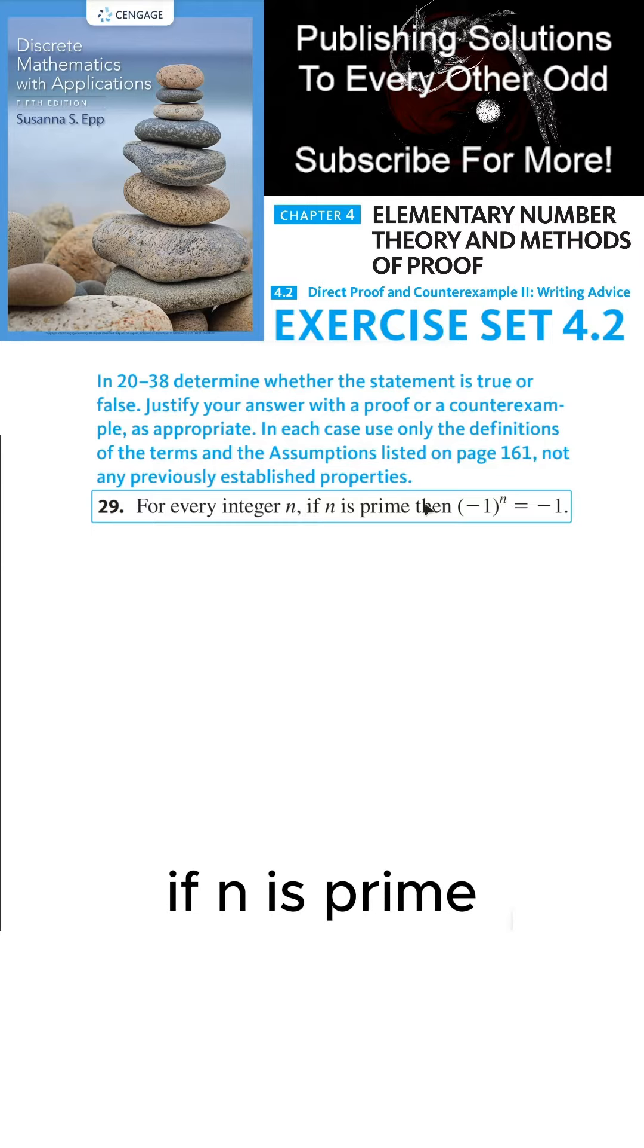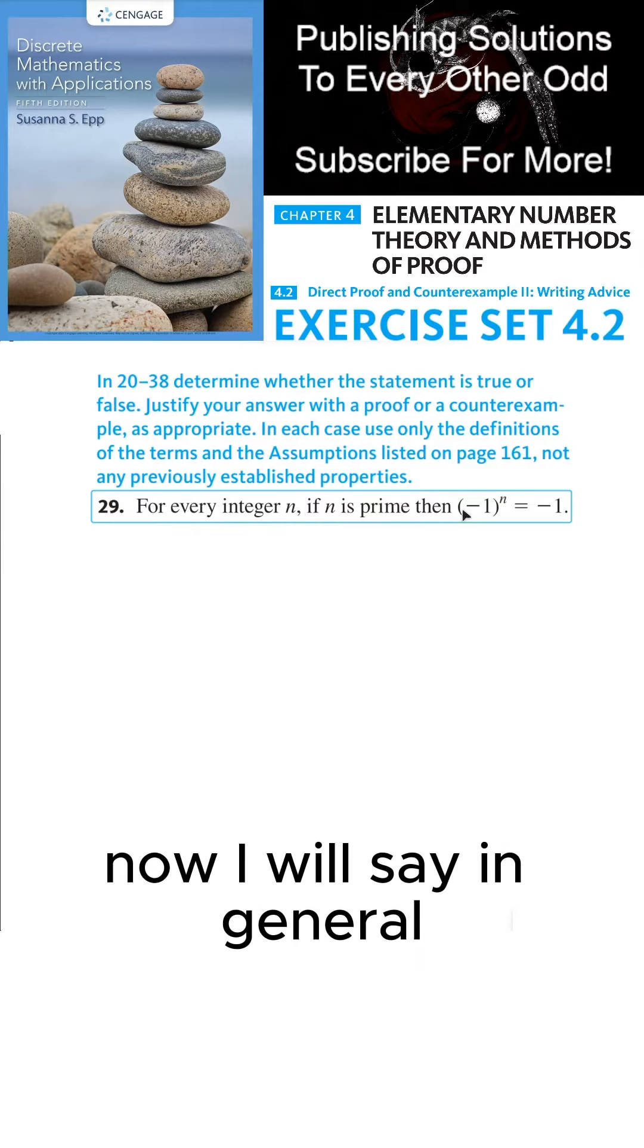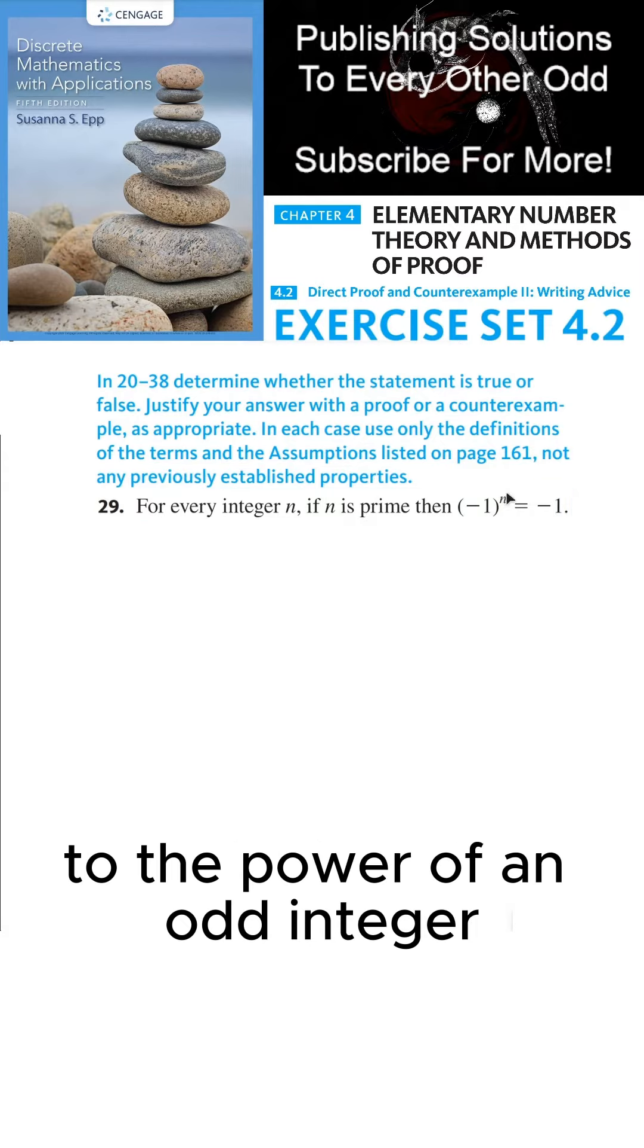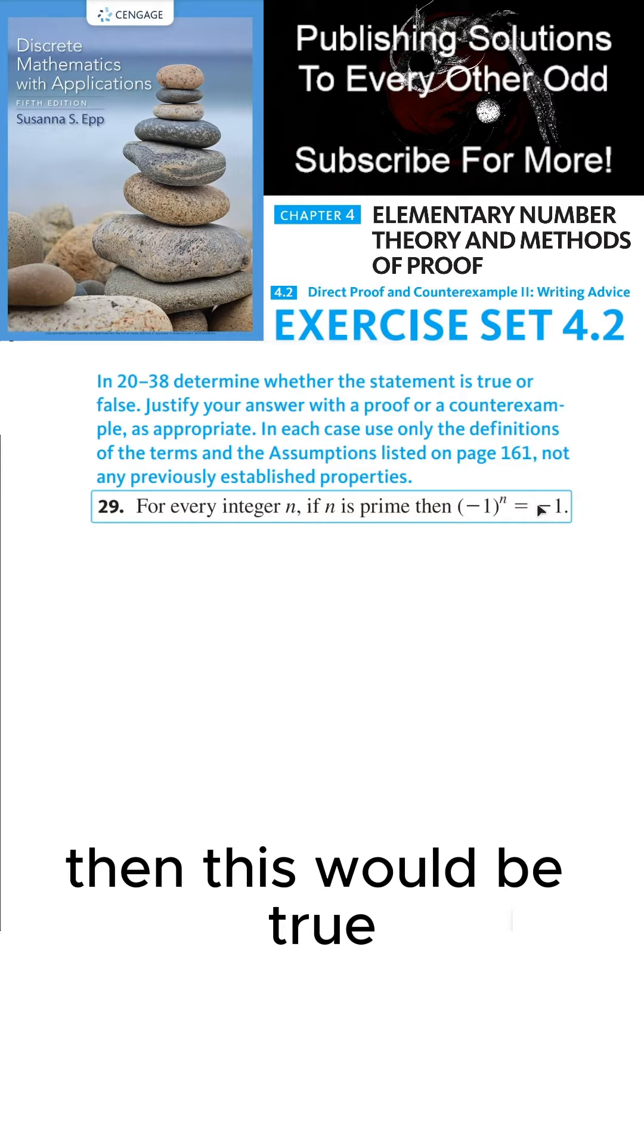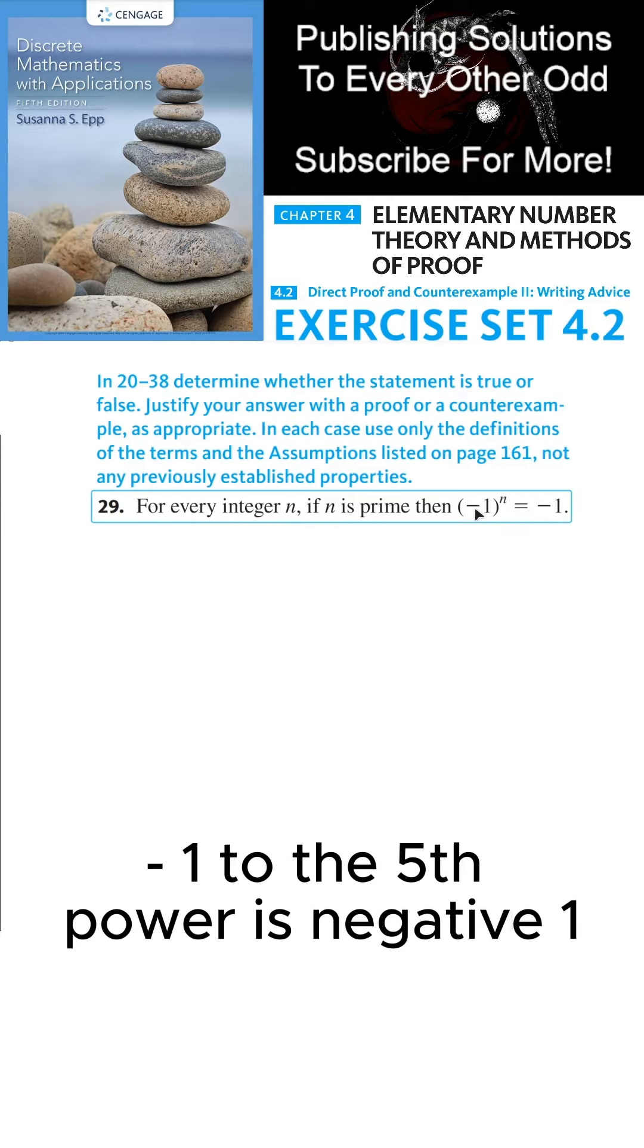For every integer n, if n is prime, then (-1)^n = -1. Now, I will say in general that if you raise negative 1 to the power of an odd integer, then this would be true. Like (-1)³ = -1, (-1)⁵ = -1, (-1)⁷ = -1, and so on.